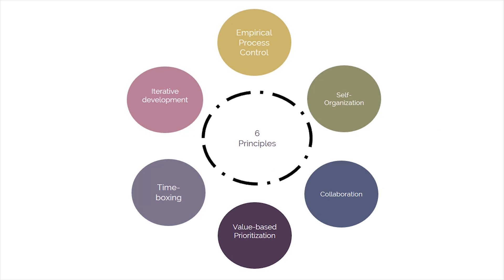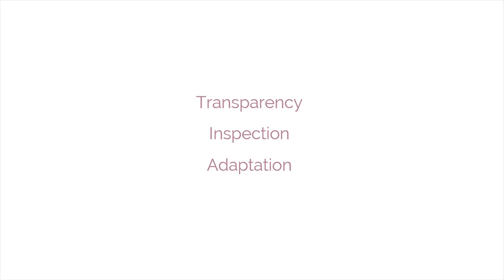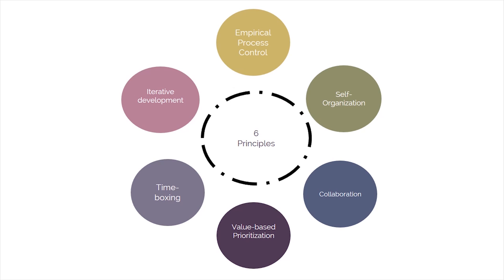Following is a detailed look at each principle, beginning with Empirical Process Control. This principle emphasizes the core philosophy of Scrum, based on the three main ideas of transparency, inspection, and adaptation.